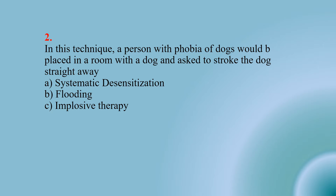Number two: In this technique, a person with a phobia of dogs would be placed in a room with a dog and asked to stop the dog straight away. The name of this technique is — Option A: systematic desensitization; Option B: flooding; Option C: implosive therapy. The right option is B — flooding.